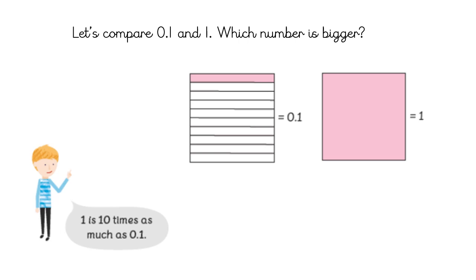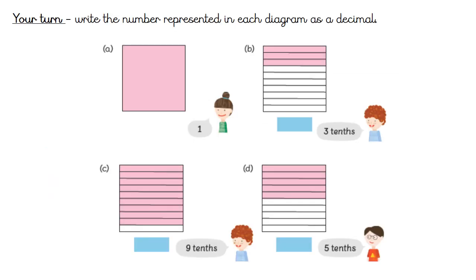Here's your first mini task: write the number represented in each diagram as a decimal. Part a is a whole square — the answer is one. Part b has three tenths shaded, part c has nine tenths, and part d has five tenths. Pause the video — can you write in the blue box, or say it out loud: how would you represent three tenths, nine tenths, and five tenths as decimals?